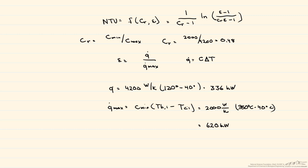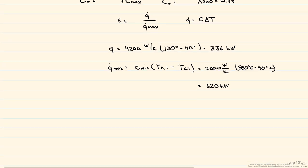So when we divide 336 by 620, which is how we find our effectiveness, we calculate that the effectiveness is equal to 0.54. So now we have the ratio of heat capacity rates, we have the effectiveness, and we're ready to calculate our NTU.